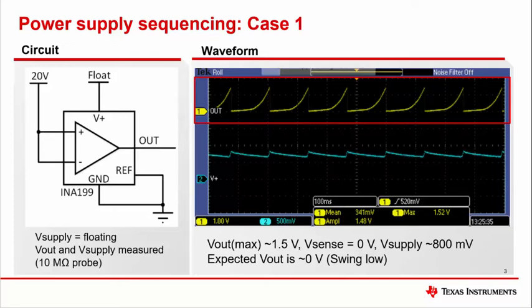For example, if the output of the device feeds an ADC on a microcontroller and the ADC makes conversions during the power-down time of the amplifier, the ADC could see a non-zero voltage. This could cause the microcontroller to take corrective action for a non-existent high current condition.